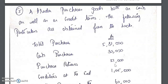Continuing from the ratios Part 2 video, we are following the same sums. This time we are going to discuss about creditors and the average payment period. Earlier we saw debtors and the average collection period, so now we will look at the creditors turnover ratio and the average payment period. We calculate debtors based on credit sales, and we measure how effectively we collect money and the average number of days taken to collect.